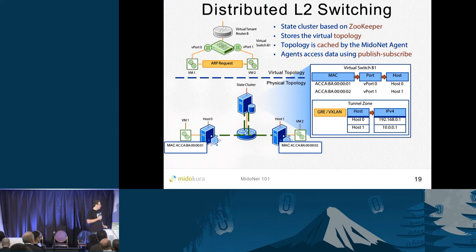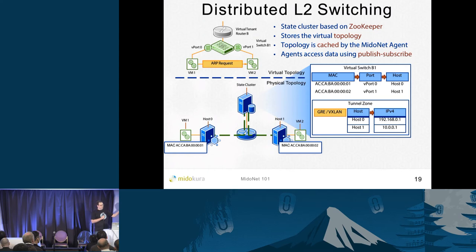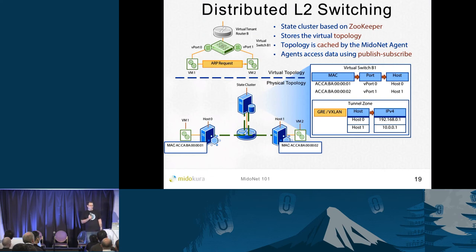When topology changes occur — for example, a live migration of VM2 to another host — the host-to-virtual-MAC mapping updates in Zookeeper. The host where VM1 is living is subscribed to that change and receives an update. It then invalidates all related flows, re-simulates, and adds new flows.